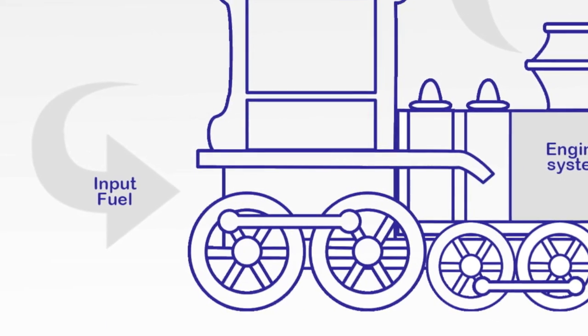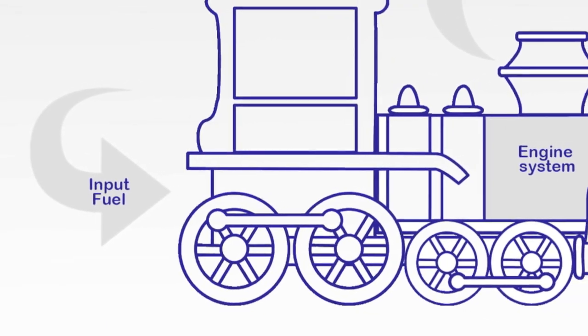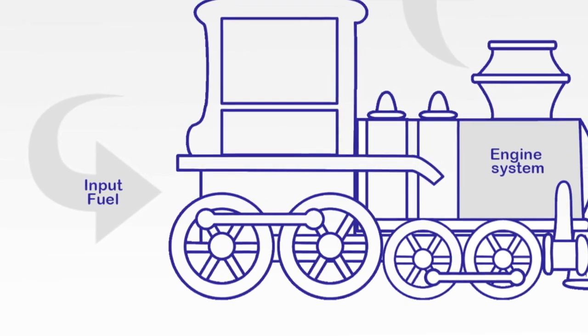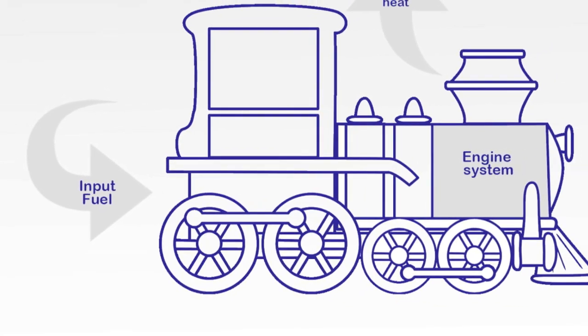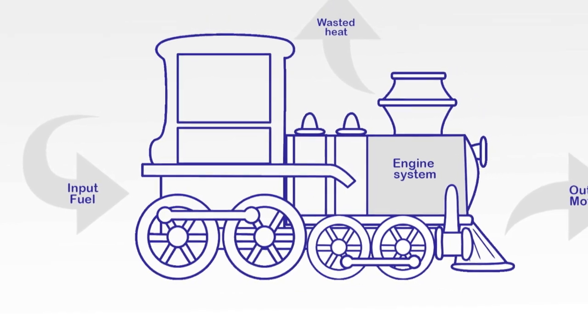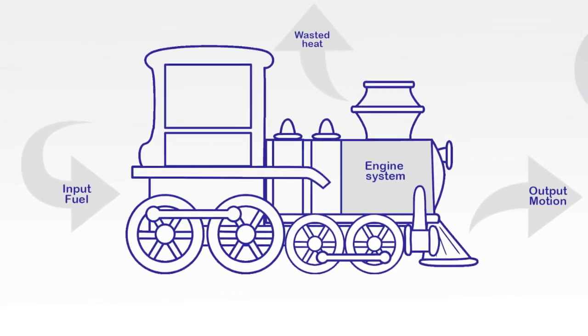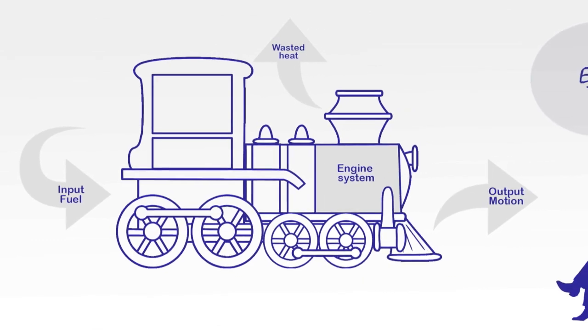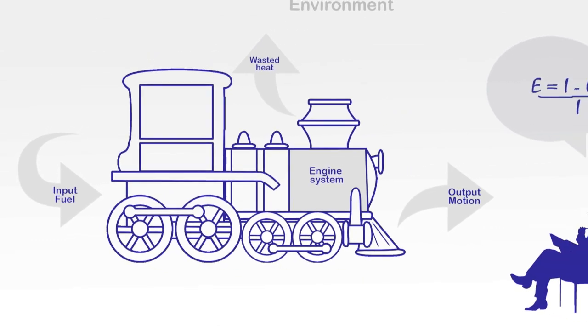An early use of this type of model was during the development of the steam engine, where scientists and engineers were thinking about the amount of fuel inputted to the engine, relative to the power output and heat energy wasted. By using this model, they could create a quantifiable ratio between them, that we would now term the efficiency of the system.